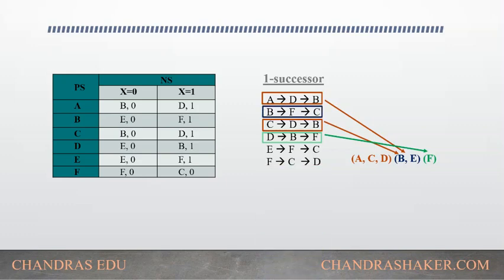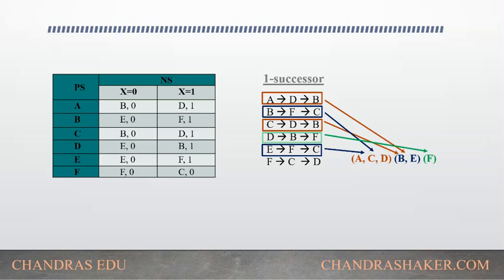When we check state b, its next state is c which belongs to the {a, c, d} partition, and state e also points to c which belongs to the same partition. So b and e remain together. However, state d must be separated because it points to a different partition compared to a and c. Partition 3 is: {a, c}, {d}, {b, e}, and {f}.